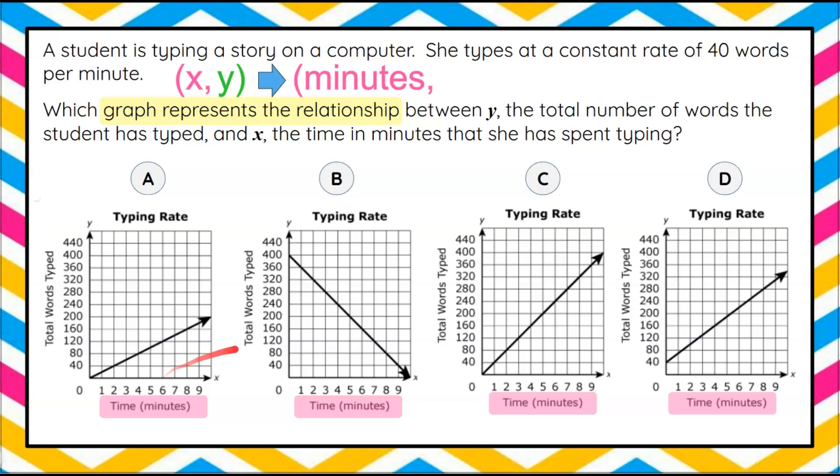So x is our time in minutes. Anytime we're going to start with x, that coordinate, we're looking at the number of minutes. And we can see this graph starts at zero and goes to nine minutes. Then when we're looking at y, we're going to be understanding that y represents the total number of words typed. And we can see all four graphs have x-axis labeled minutes and y-axis labeled total words typed.